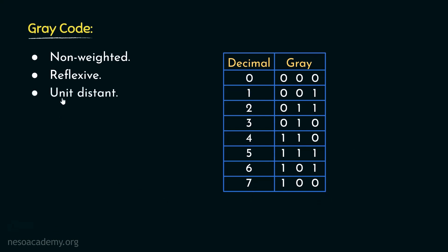Gray codes are also unit distant. Observing subsequent encodings — for example, 0 0 0 and 0 0 1 — to convert these patterns to one another, all we have to do is toggle the LSB. This holds for all the different patterns; for instance, consider two patterns where converting one to the other also requires toggling only the LSB.